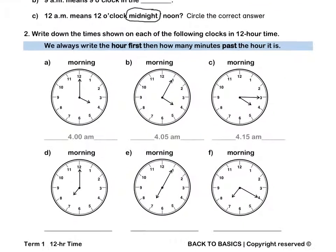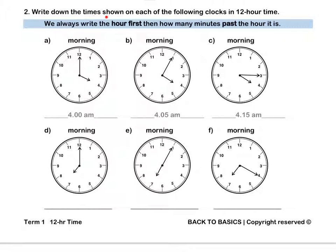Let's continue. Question 2. Write down the time shown on each of the following clocks in 12 hour time. Remember we need to use AM for morning times. We always write the hour first then how many minutes past the hour it is. For A, the clock is showing a morning time and it is 4 o'clock so we write 4 AM. For B, it is now 5 minutes past 4 so we write 4.05 AM for morning.